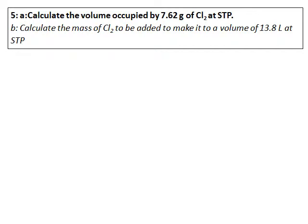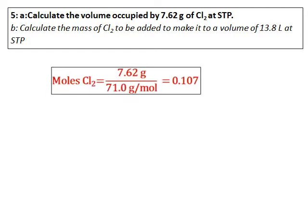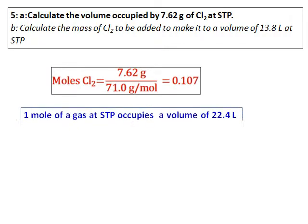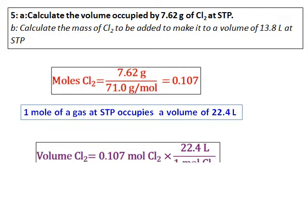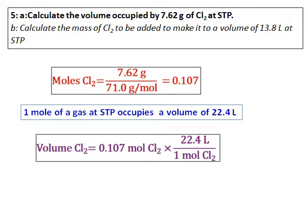Calculate the volume occupied by 7.62 grams of chlorine at STP. The second part is I need to calculate the mass of chlorine to be added to make it to a volume of 13.8 litre under the same condition. So the first step I will do is to calculate the moles of chlorine. Grams is given, molar mass of chlorine we know, so I get the moles of chlorine. And I also know that one mole of a gas under standard temperature pressure condition occupies a volume of 22.4 litres. So I will use this to calculate the volume of chlorine. And the volume of chlorine comes as 2.40 litres.